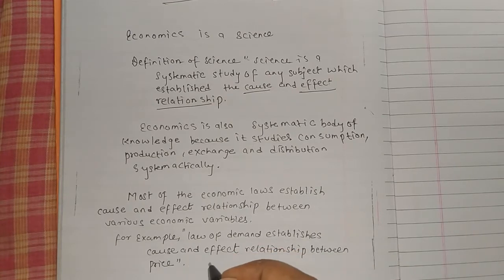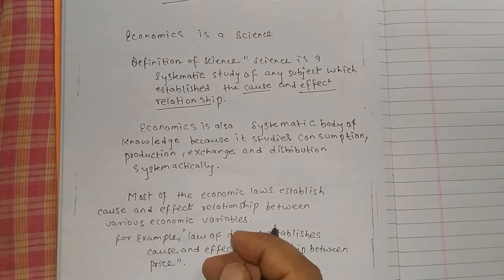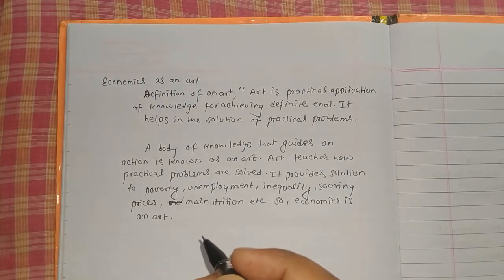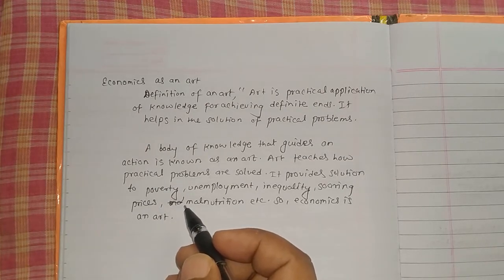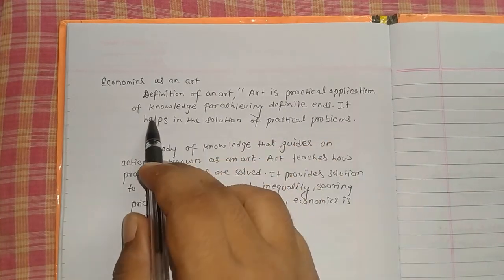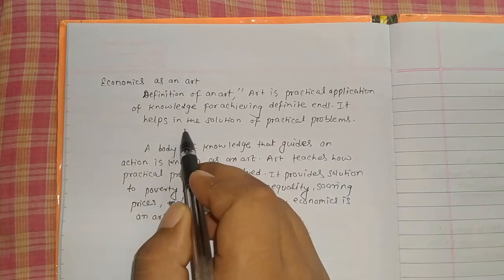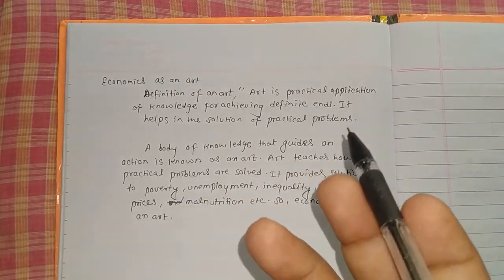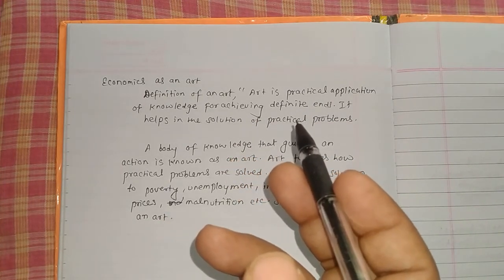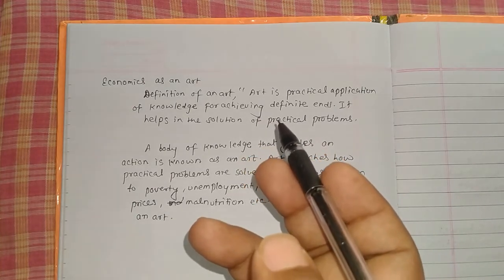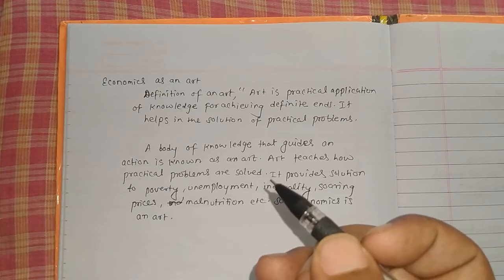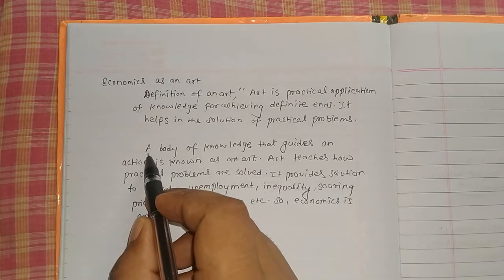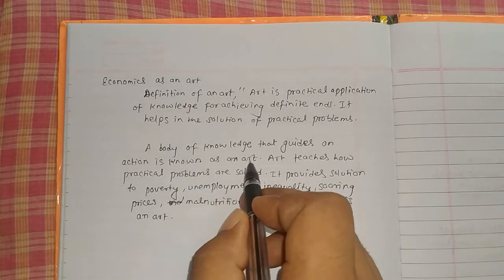Some people say that economics is an art. To prove that economics is an art, we must be familiar with the definition of arts. Art is the practical application of knowledge for achieving definite ends; it helps in the solution of practical problems. A body of knowledge that guides action is known as an art, and economics provides solutions to problems that arise in the economy in a practical way.